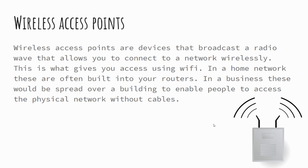Moving on to hardware — wireless access points. You will probably have a wireless access point in your house built into the box provided by your internet provider, whether that's BT, Sky, Virgin, or whoever. In school, we have wireless access points dotted around — those white boxes pinned to the walls — and this is what transmits the wireless signal, which solely connects you to a local network.